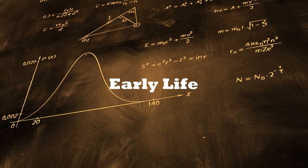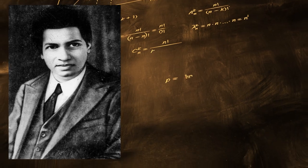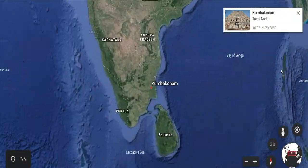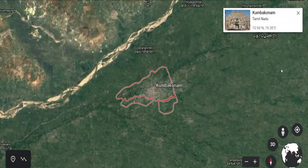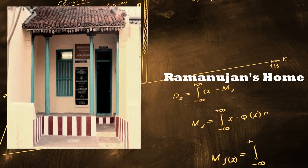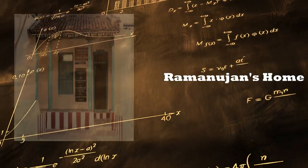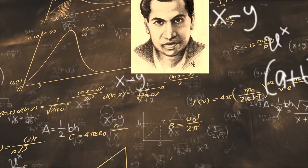Ramanujan was born on December 22nd, 1887 in a Brahmin Hindu family at Erode near Kumbakonam, a small town in South India. His father was a clerk in a cloth merchant's office in Kumbakonam and used to maintain his family with a small income. His mother was a devoted housewife and had a strong religious belief.